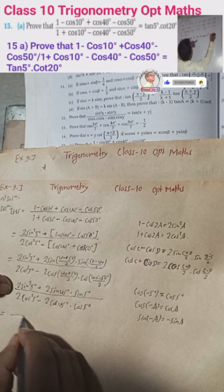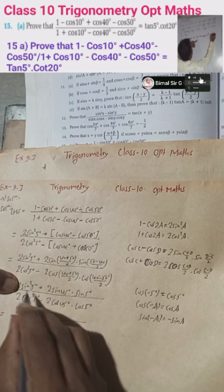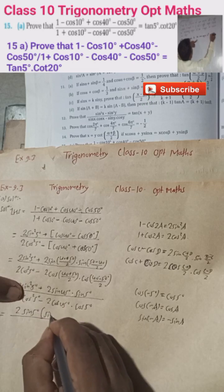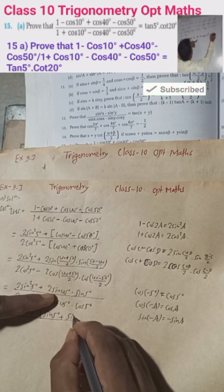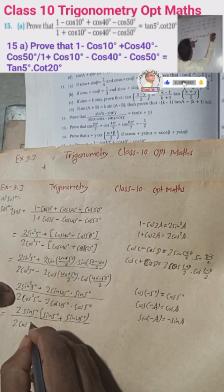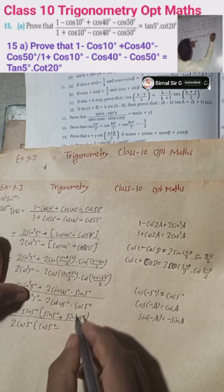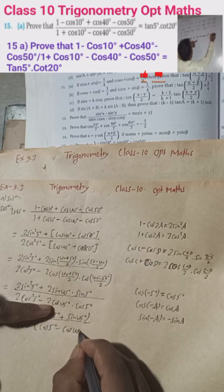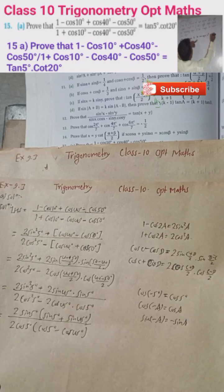Now take common factors: in the numerator, take 2sin5° common — remaining is sin5° + sin45°. In the denominator, take 2cos5° common — remaining is cos5° - cos45°.